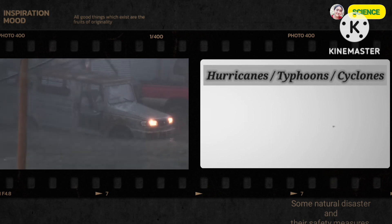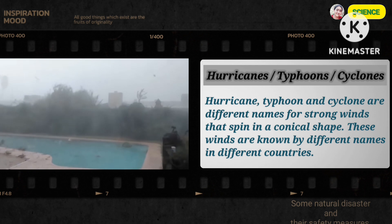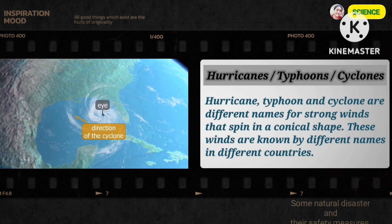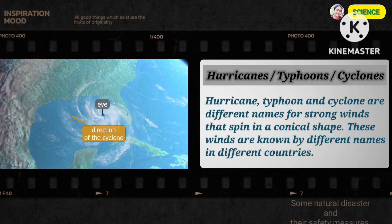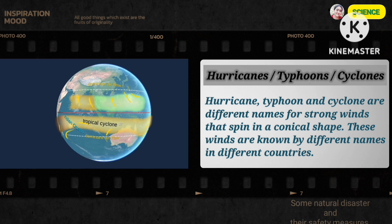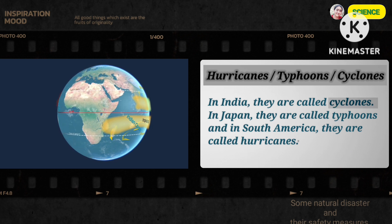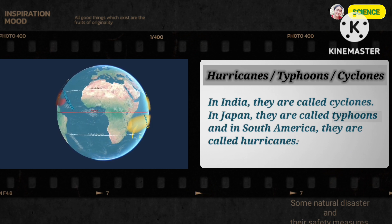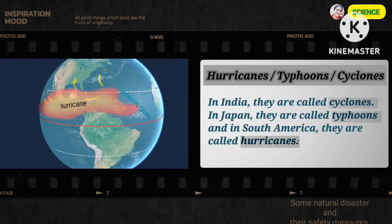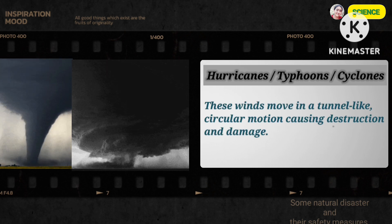Hurricanes, Typhoons, Cyclones. Hurricane, Typhoon and Cyclone are different names for strong winds that spin in a conical shape. These winds are known by different names in different countries. In India, they are called Cyclones. In Japan, they are called Typhoons. And in South America, they are called Hurricanes.